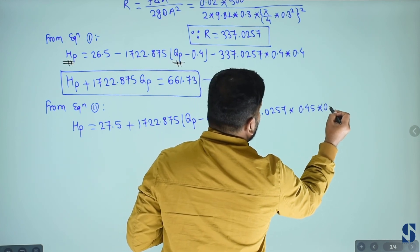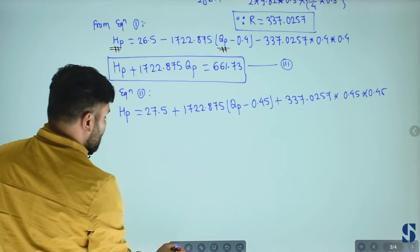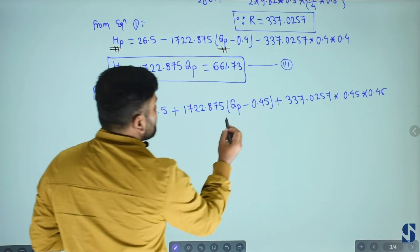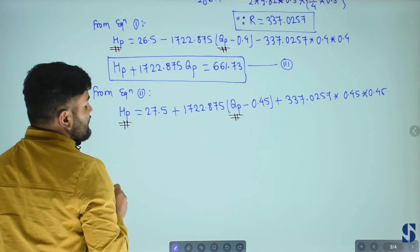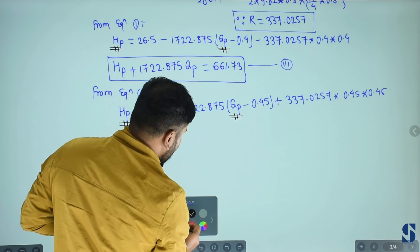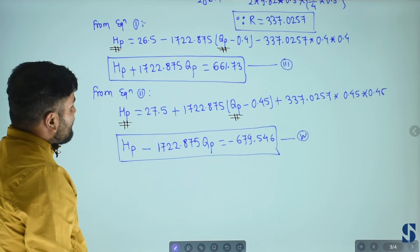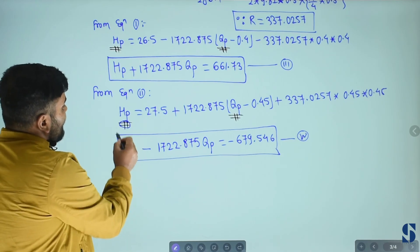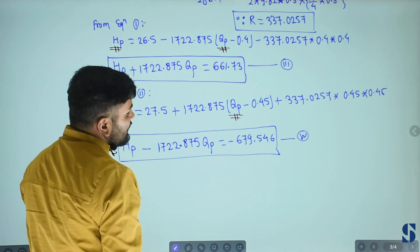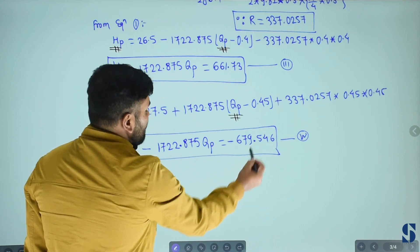Two variables, HP and QP are unknown. HP minus 1722.875 QP equals to minus 679.546. Two unknowns HP and QP, two equations.